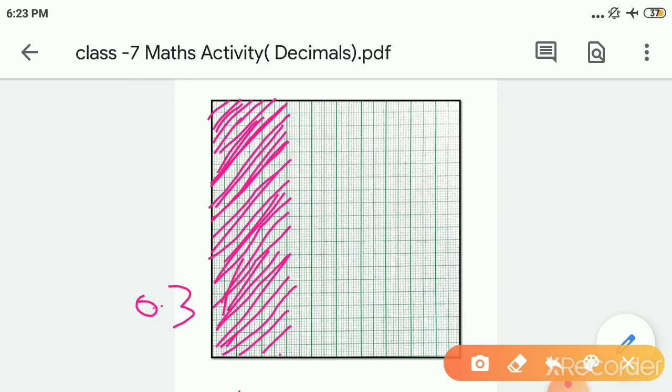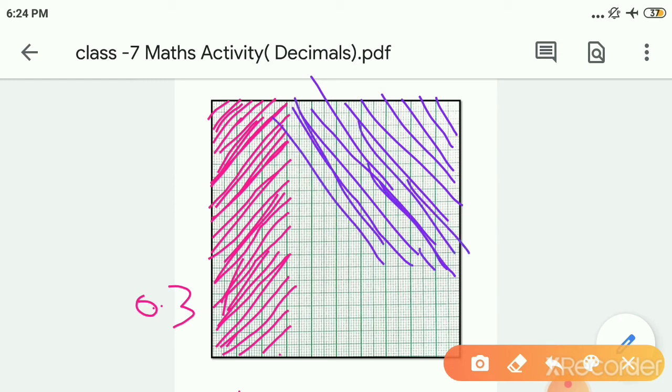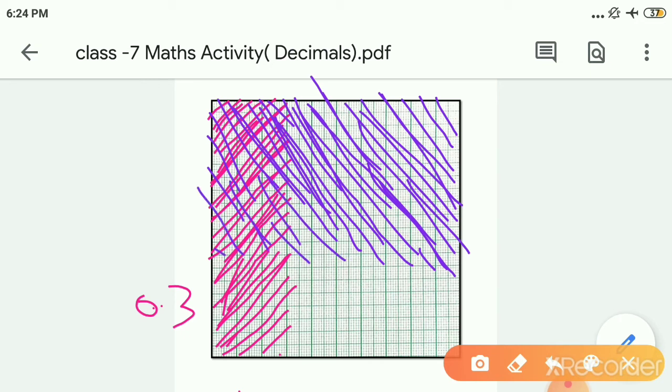Now the another digit was 0.7. So I have to shade now 7 horizontal lines with another color. So for that I am using the purple color. 7 horizontal. So let me shade. 7 I have to shade. So till here it will be. So children when I am shading the 7 horizontal, please don't shade only that part which is not shaded. It will be overlap this also. It means full horizontal line we have to shade. In this manner I have shaded 7 horizontal lines.